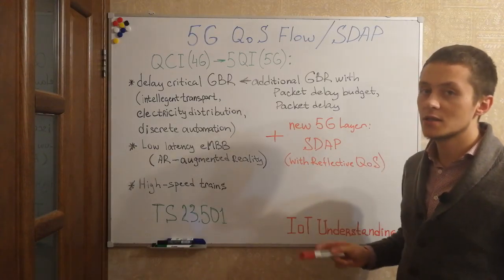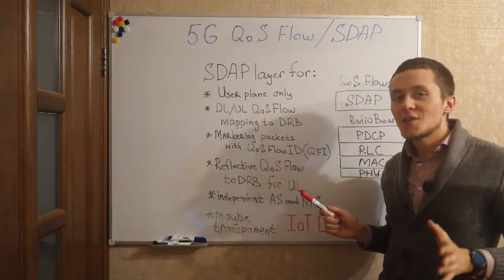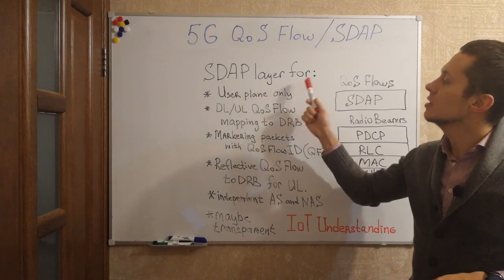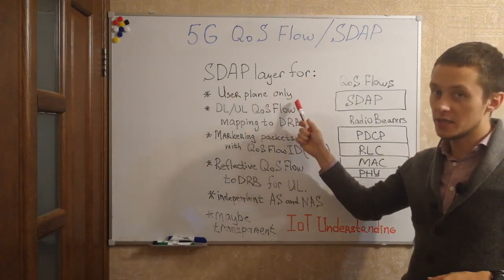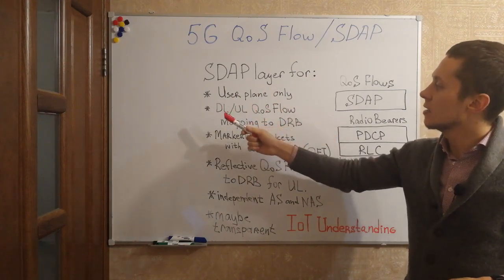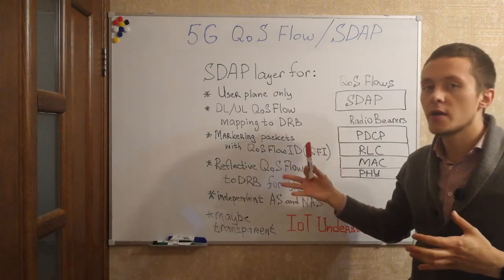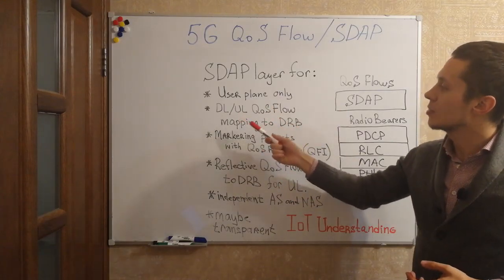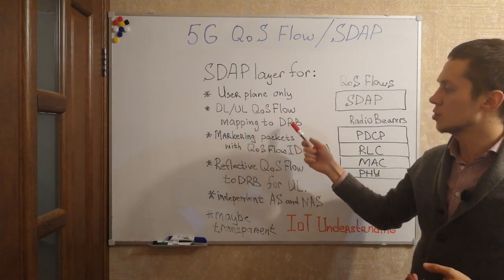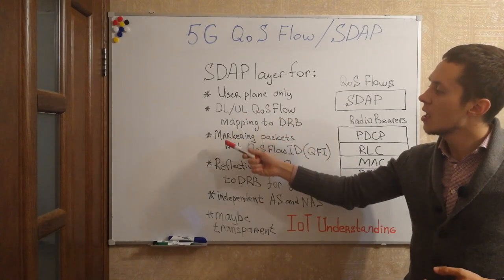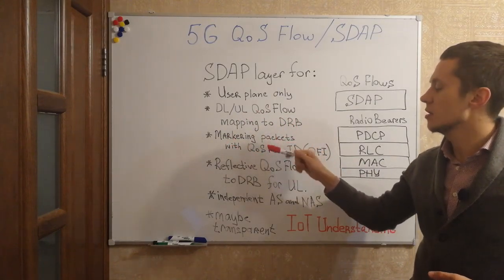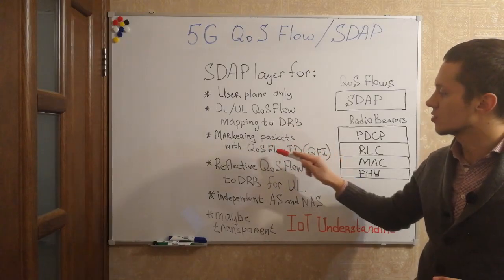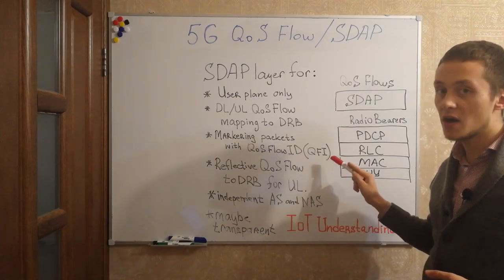Let's talk about it a little bit more. Basically this new layer is only for the user plane and the major aim of this layer is to map uplink and downlink QoS flows to data radio bearers, and mark packets with special IDs — QoS flow IDs, or QFI.